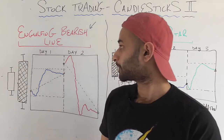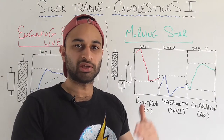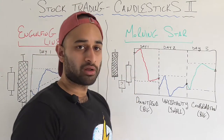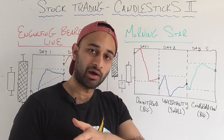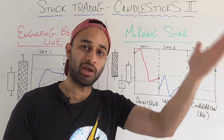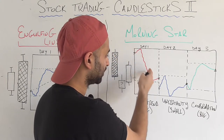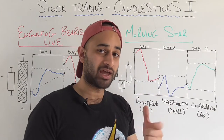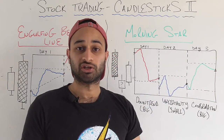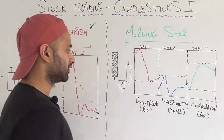Now let's look at a slightly more complicated pattern that gives us even more evidence about whether a trend is real — the morning star. It's a three-step process: first a downtrend where the price is clearly going down; then an uncertainty period where we're not sure whether it will go back up; and finally a confirmation period that it really is going back up. The small middle change is what distinguishes it from the large outer moves.